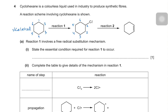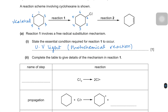Reaction one involves a free radical substitution mechanism. The question asks to state the essential condition required for reaction one to occur. The answer is UV light, because this is a photochemical reaction — any photochemical reaction requires a photon to initiate it. Next, complete the table to give details of the mechanism in reaction one.